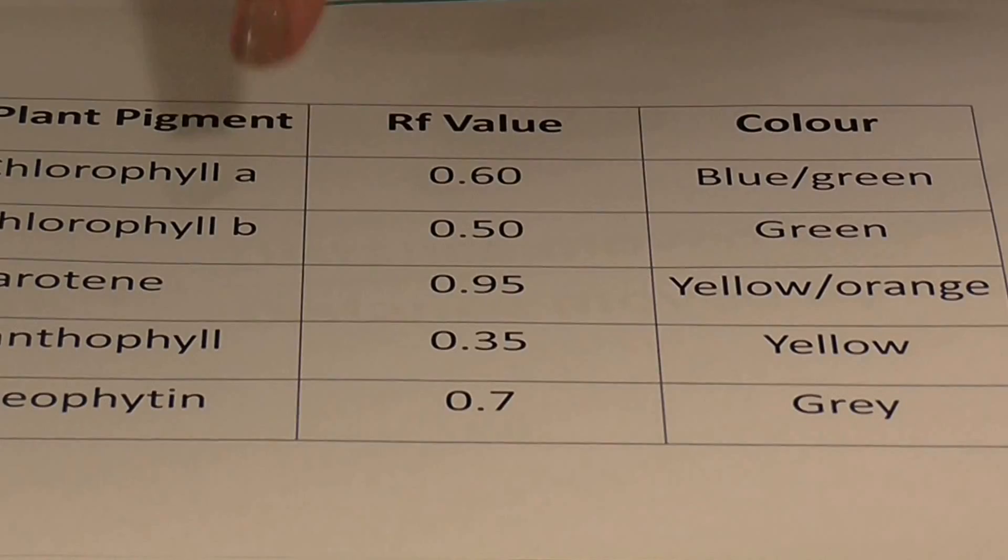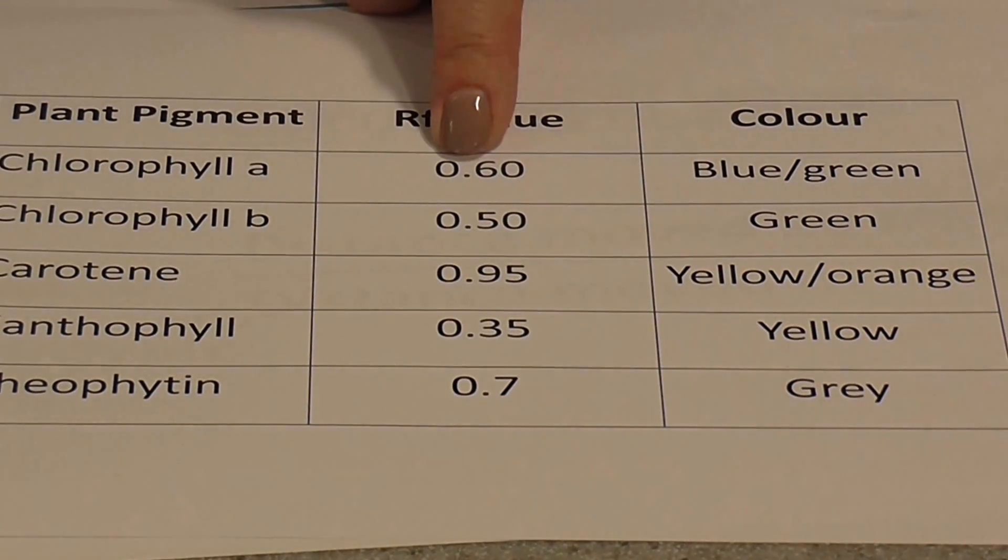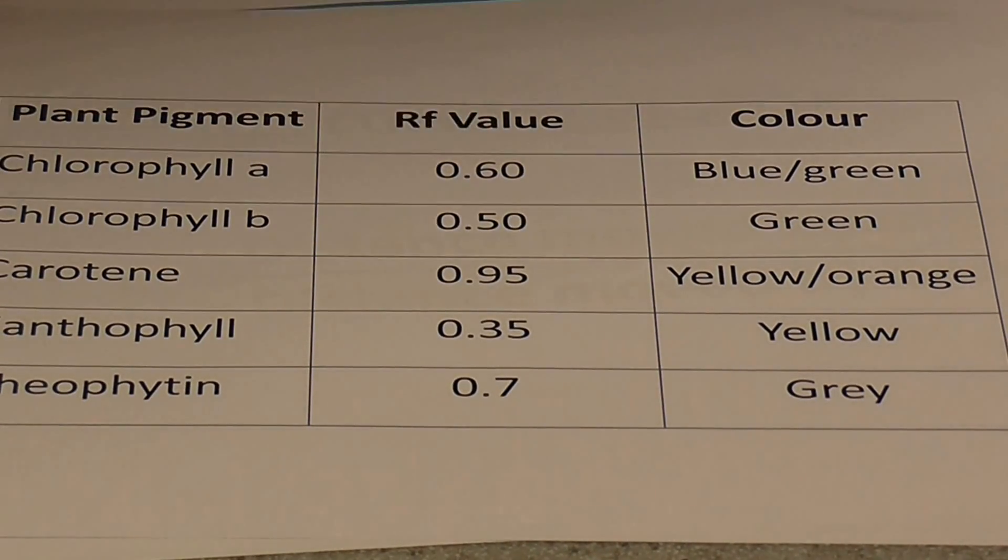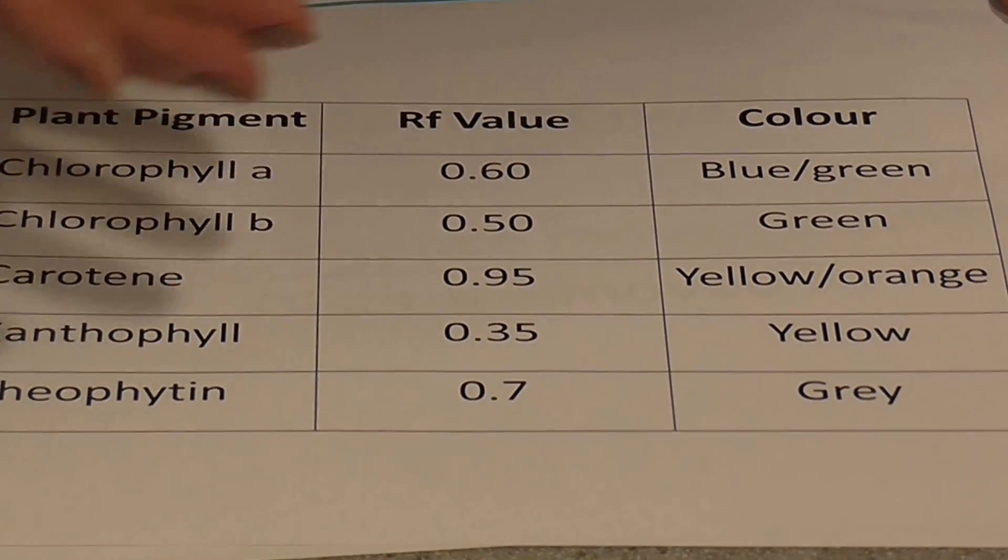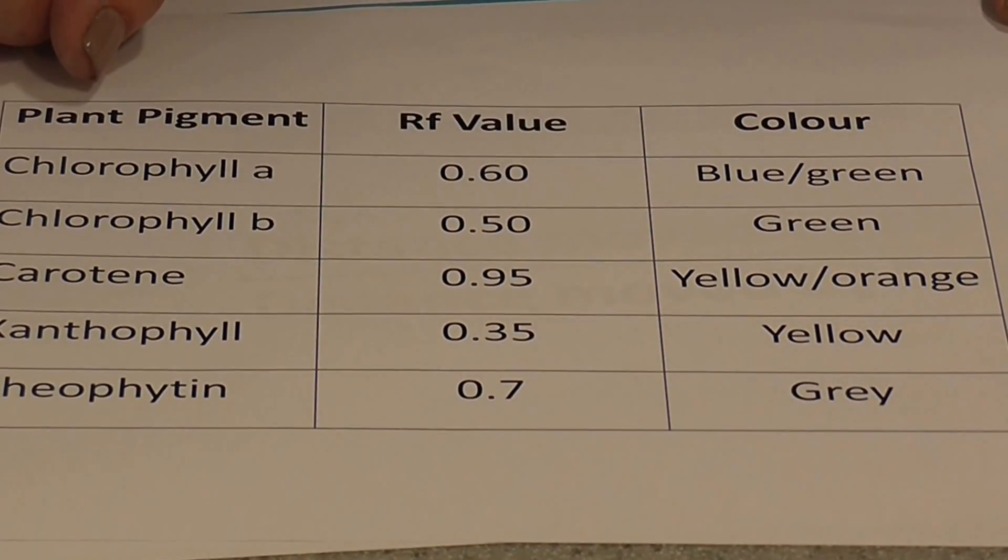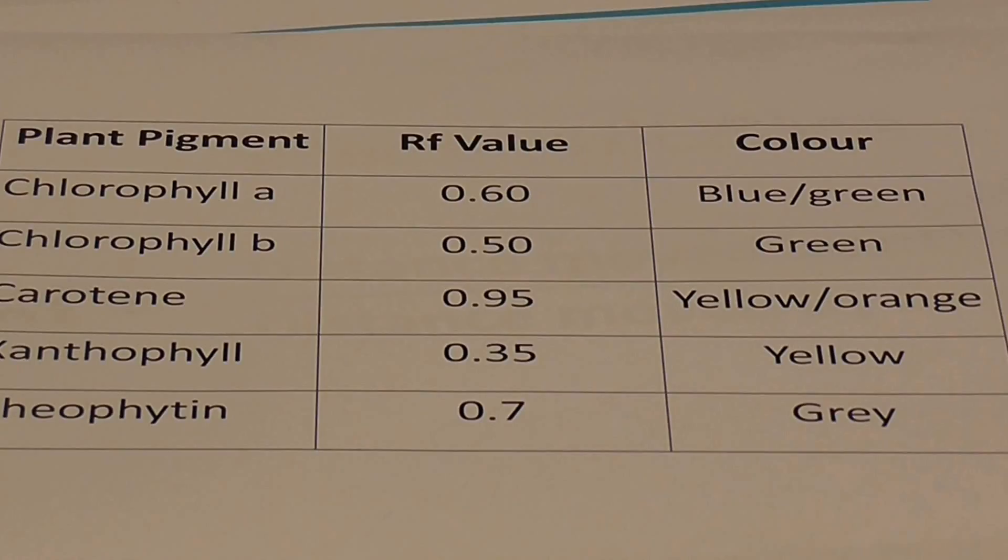Now, you know that you've got your calculation right if you get a value of less than one. An RF value is always less than one. So if you get a value of one or above, you know you've actually basically calculated it the wrong way around.